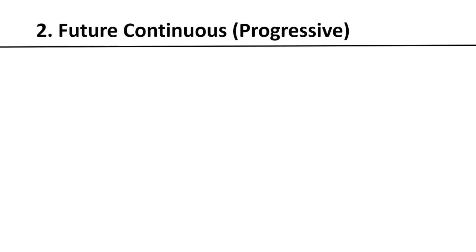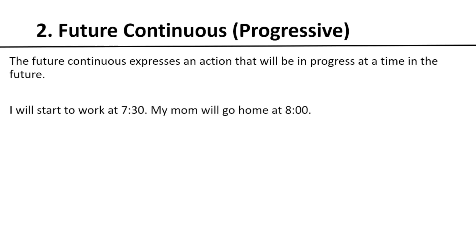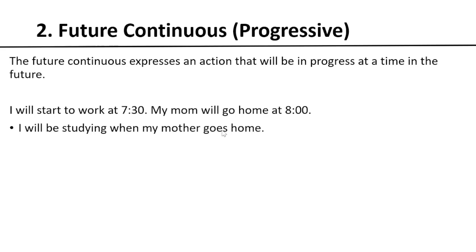Now let's continue to future continuous. What is future continuous? The future continuous expresses an action that will be in progress at a specific time in the future. For example: I will start to work at 7:30 and my mom will go home at 8. So we can say 'I will be studying when my mother goes home' — because I start at 7:30, and when my mother goes home I will be studying, probably at 7:45.